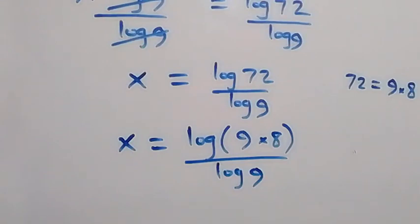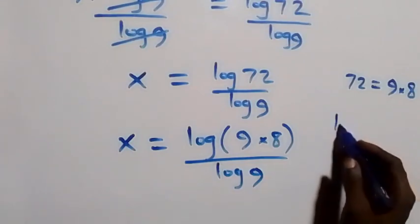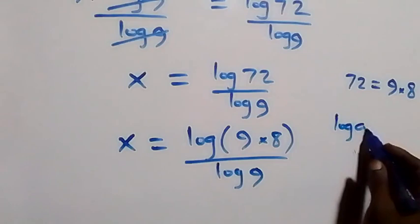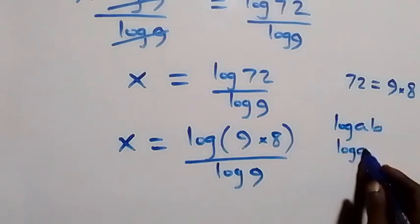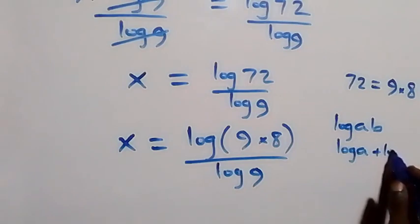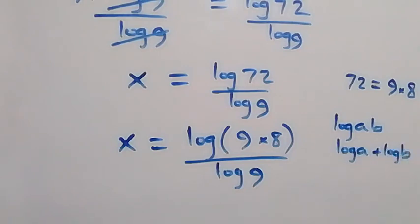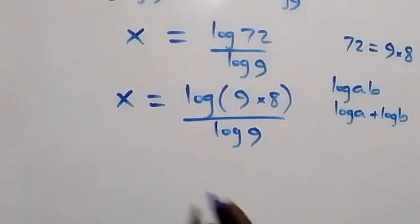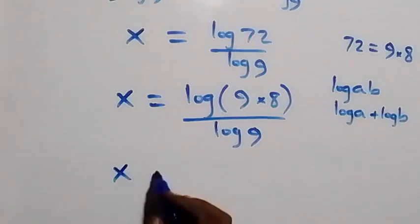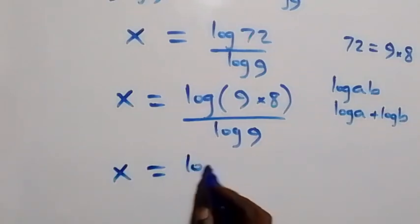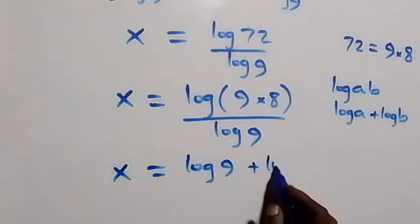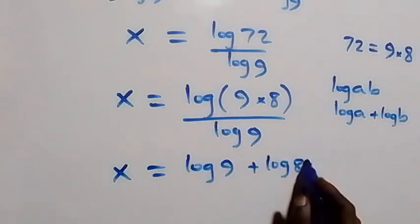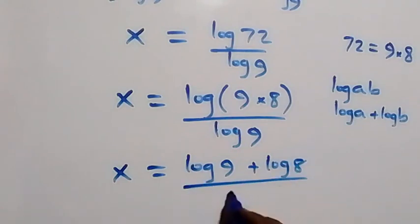Applying the law of logarithm: log(a times b) can be written as log a plus log b. So what we have now becomes x equals log 9 plus log 8, all over log 9.